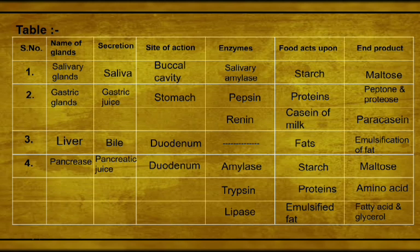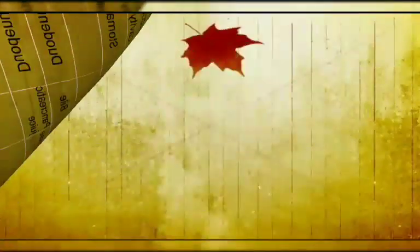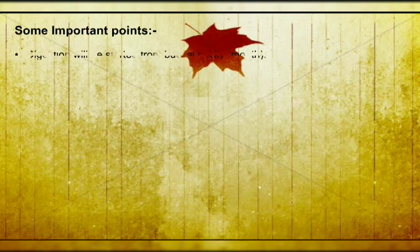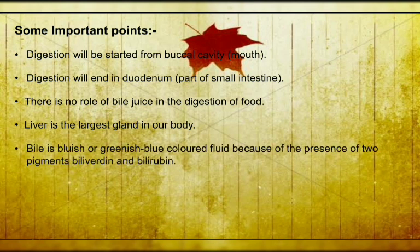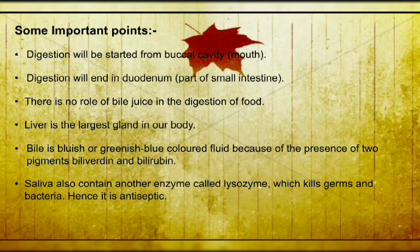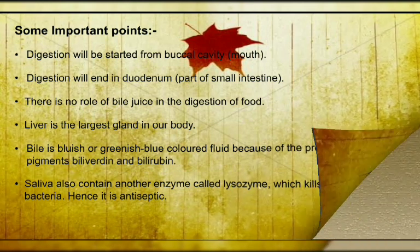You can easily learn all the glands with their secretion, site of action, enzyme, and food sector from this table. Some important points to always remember: digestion starts from the buccal cavity (mouth); digestion ends in the duodenum part of the small intestine. Bile has no role in digestion of food. Liver is the largest gland in our body. Bile is bluish-green in color due to two pigments: bilirubin and biliverdin. Saliva also contains an enzyme called lysozyme, which kills all germs and bacteria, making it antiseptic.